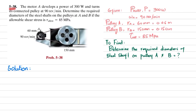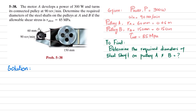Welcome back. Problem 5-38: Motor A develops a power of 300 watts and turns its connected pulley at 90 revolutions per minute. It is connected with pulley B having a radius of 150 millimeters. Determine the required diameter of the steel shaft for pulleys A and B if the allowable shearing stress is 85 megapascal. The pulleys are connected with each other using a belt. Let's start with the solution.